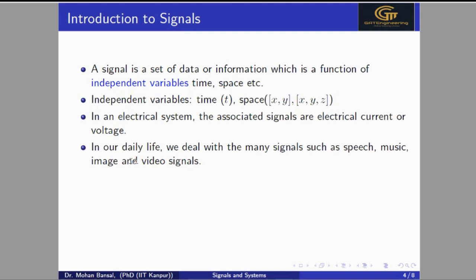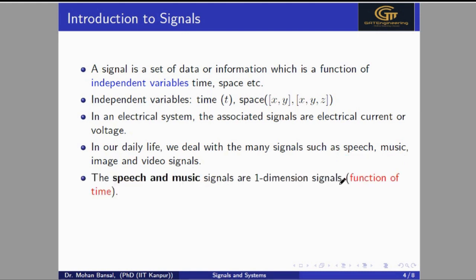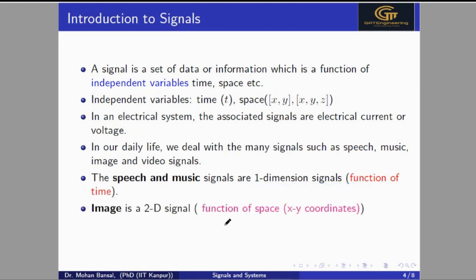In our daily life we deal with many signals such as speech signals, music we listen to, and images and video we see on televisions. Speech and music are functions of time only, so they are one-dimensional signals. An image is a two-dimensional signal, which is a function of coordinates x and y.